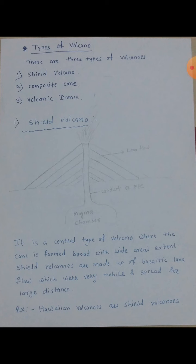Ata shield volcano madhe diagram dhe le le ahe. Tumala diagram dhesti ahe — tumala broad dhakholo la ahe, volcanic cone. Tachya madhe lava flow dhakholo la ahe. Conduit or pipe ahe, ki ji magma chamber la connected ahe. Aani tachya tuhun surface var material emitted zhali la ahe.